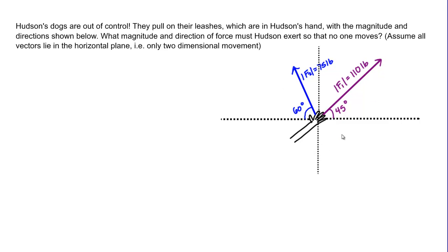Out to the side here we have a diagram. We see Hudson's hand and then two force vectors which represent the forces of the dogs pulling against his hand. We're given the magnitude and the direction by an angle of each of those forces. The purple vector over to the right has a magnitude of 110 pounds — a pound is a common unit for force — at an angle of 45 degrees above the horizontal. The second force, F2, has a magnitude of 75 pounds and its direction is 60 degrees above the left horizontal as shown by the angle.